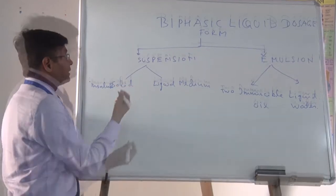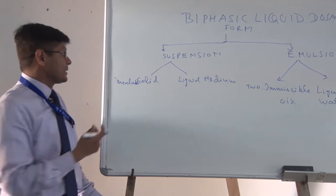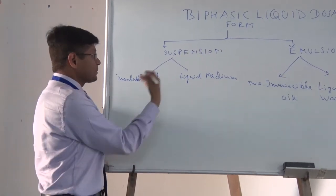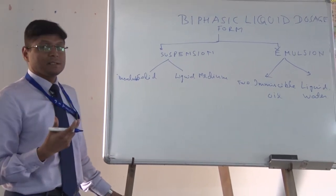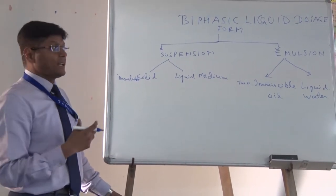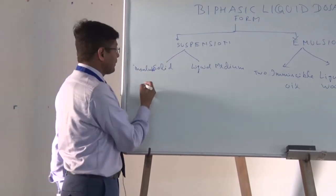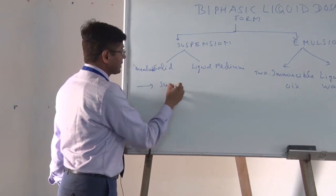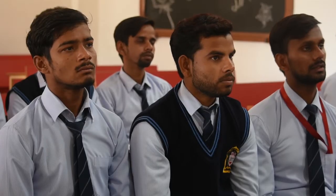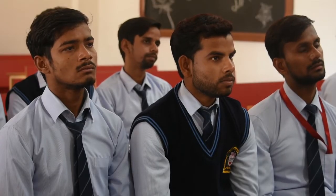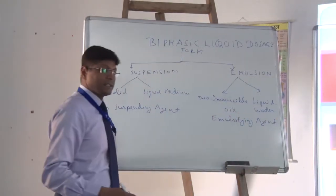As per suspension, these are disperse systems — biphasic disperse systems — where the solid is dispersed into the liquid medium. This is carried out by the suspending agent, which is the third component we add. In the case of emulsion, we use an emulsifying agent instead.